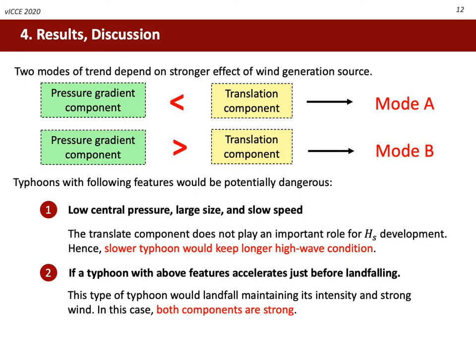The difference between the two modes could be found in which wind component had the stronger effect. If the effect of the pressure gradient component is weaker than that of the translation component, Hs shows Mode A behavior — a sensitive profile to the variation of V. On the contrary, if the pressure gradient component is stronger, a typhoon would keep a strong wind field even if the translate speed is changed.